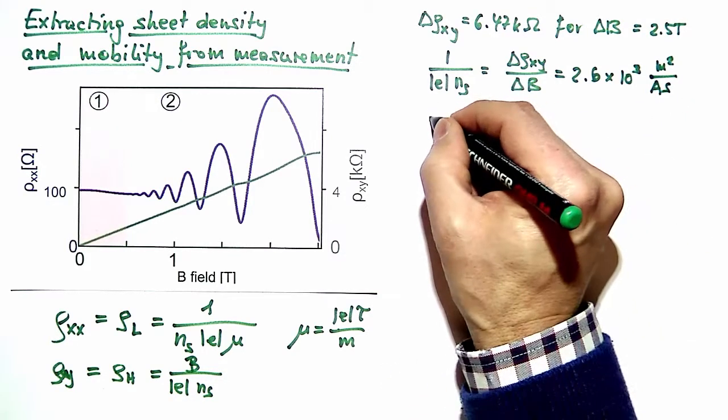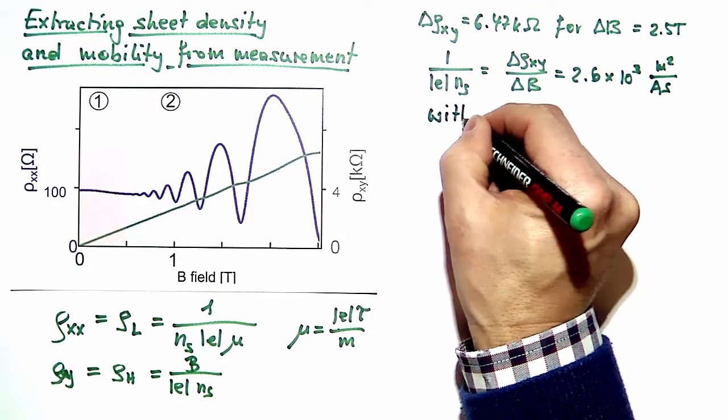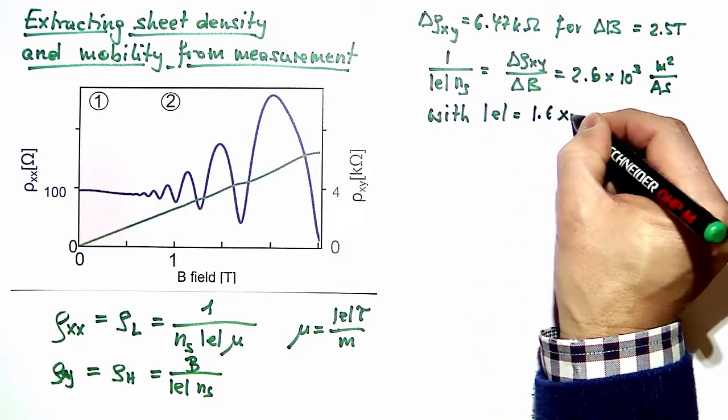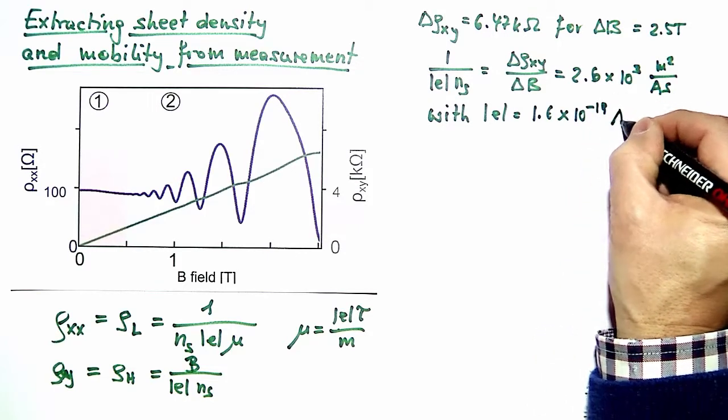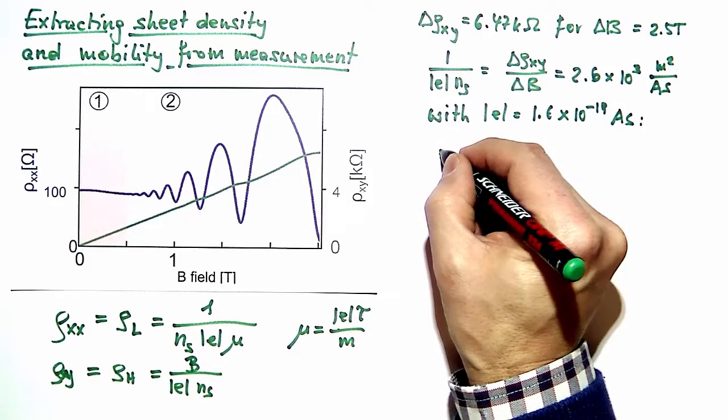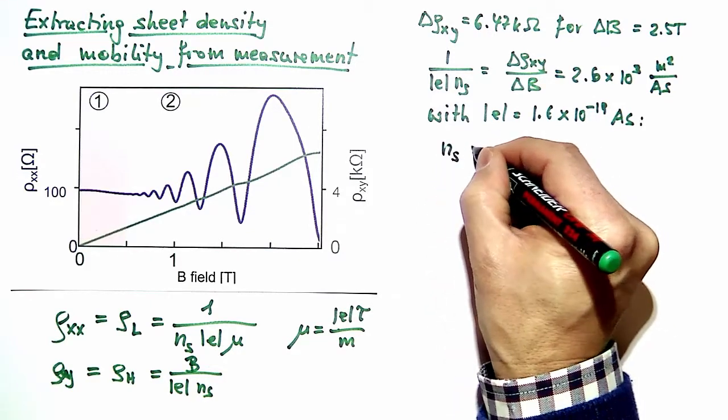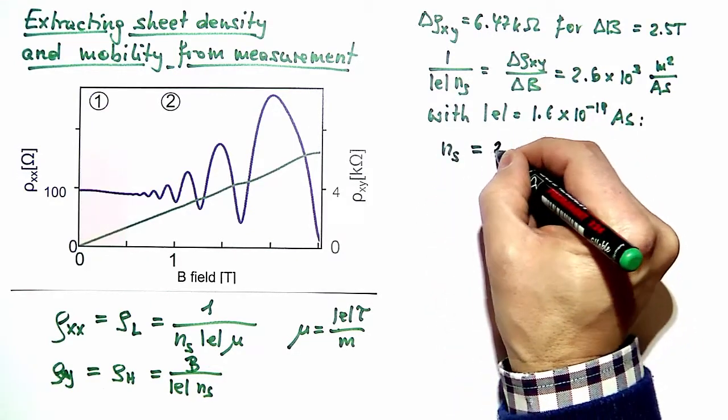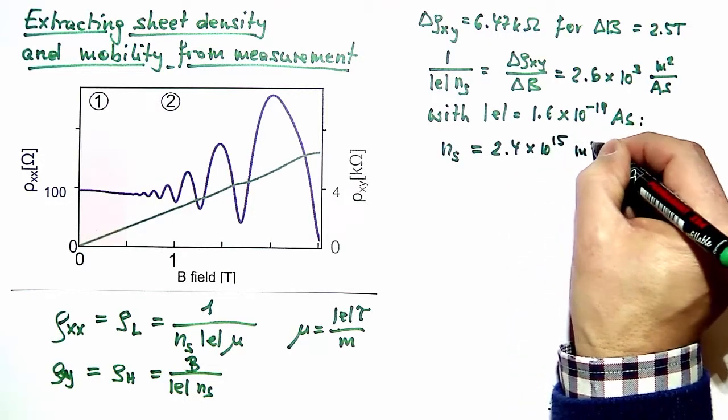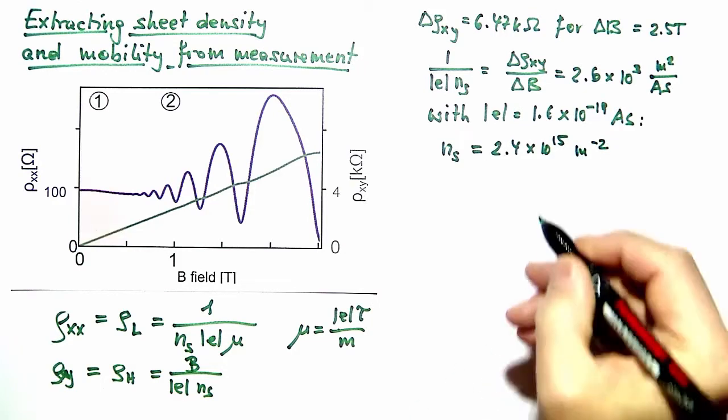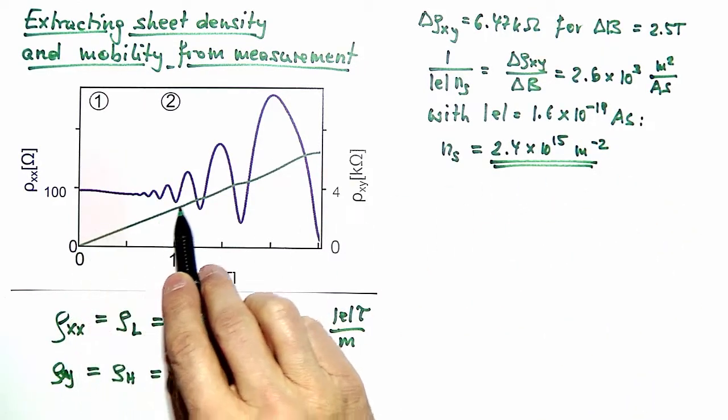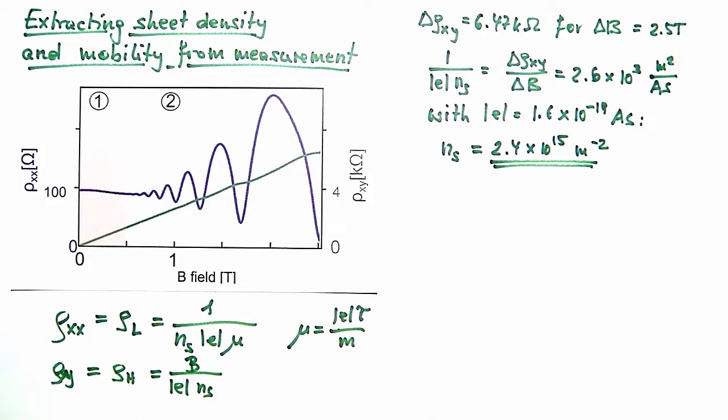Now with the elementary charge given by 1.6 times 10^-19 amp seconds, we work out that the sheet density N_S is indeed 2.4 times 10^15 per square meter. This is our first result obtained entirely from the slope of the Hall resistivity.